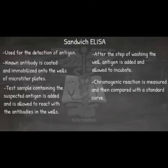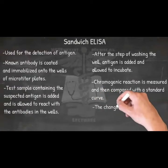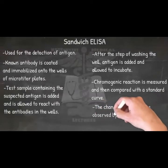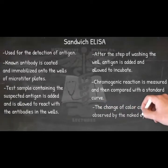In a positive test, an enzyme acts on the substrate to produce a color, and its intensity can be measured by spectrophotometer or ELISA reader. The change of color can also be observed by the naked eye.